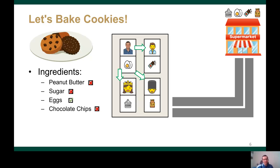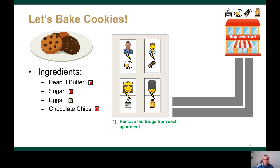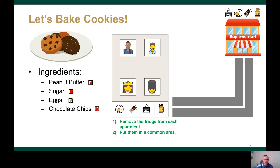However, this agreement means that every time I need ingredients that can be found in my neighbor's fridge, I have to communicate with my neighbor and maybe disrupt his or her activity. So the question is how can we improve our agreement? We decided that we can remove the fridges from our apartments and put them in the common area where all of us have access. This way, I can get the missing ingredients and save the trip to the supermarket without bothering my neighbors.